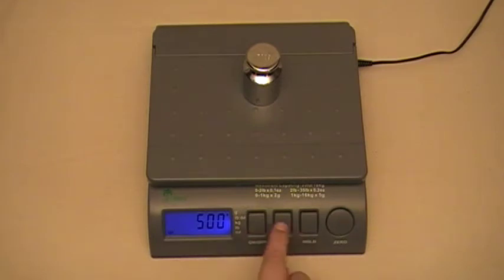Now with this scale you can switch between grams by pressing the unit key. Go to pounds and ounces. One pound, 1.6 ounces. To kilograms. To just pounds. To just ounces. And back to grams.